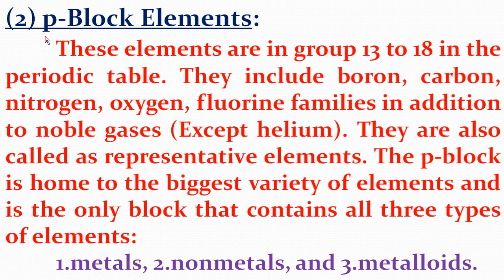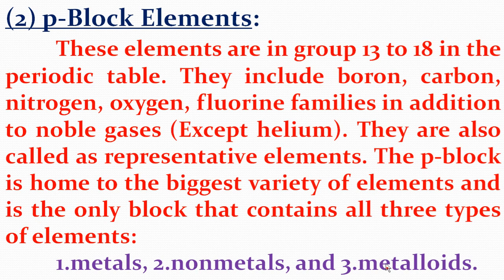P block elements are in Groups 13 to 18. They include the boron, carbon, nitrogen, oxygen, and fluorine families — halogens — in addition to noble gases such as neon, krypton, and xenon. These are called representative elements. The P block is home to the biggest variety of elements and is the only block that contains all three types of elements: metals such as aluminium and gallium, nonmetals such as carbon and nitrogen, and metalloids such as silicon and germanium.